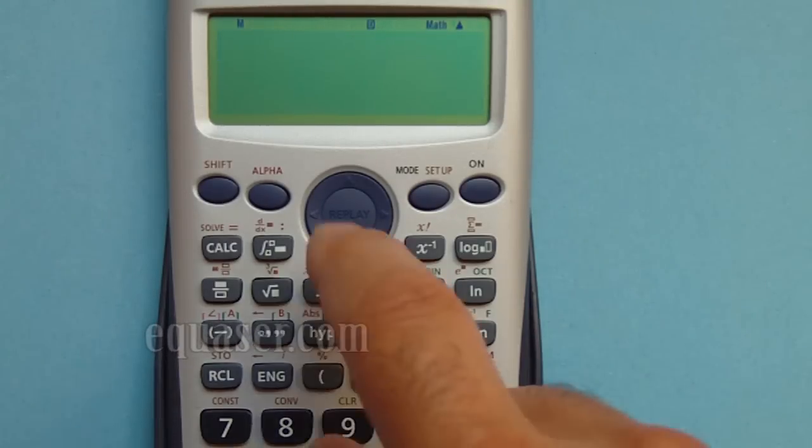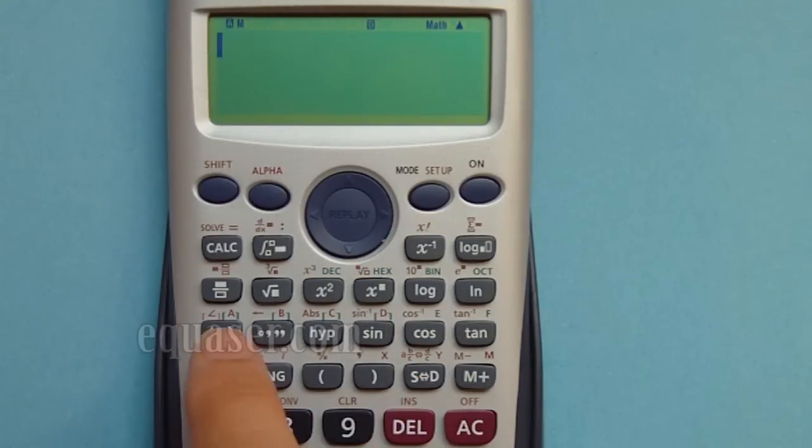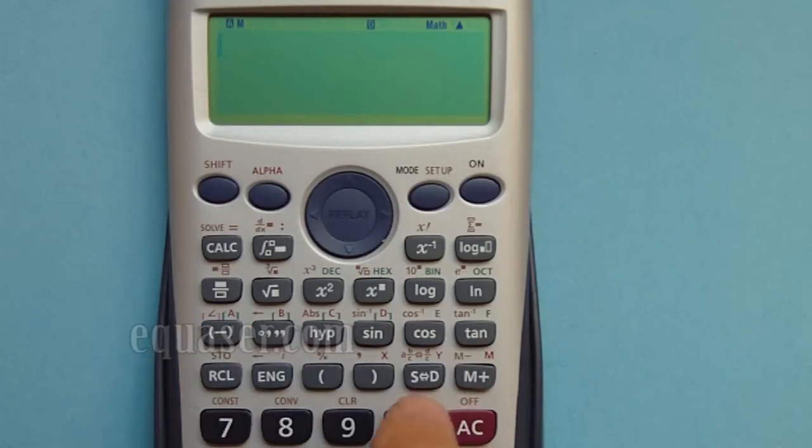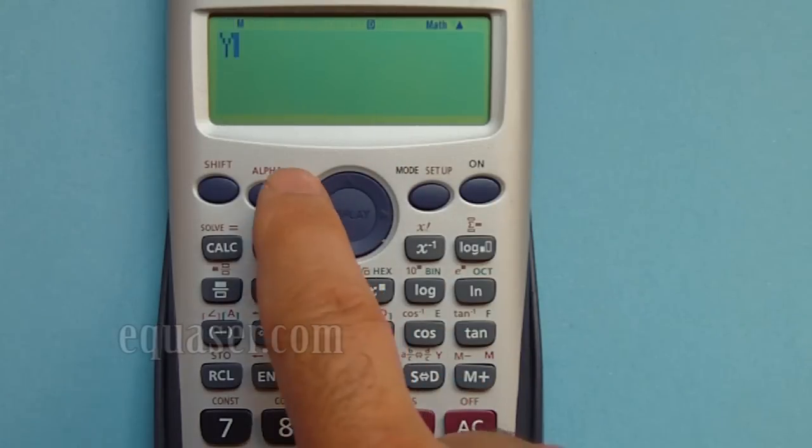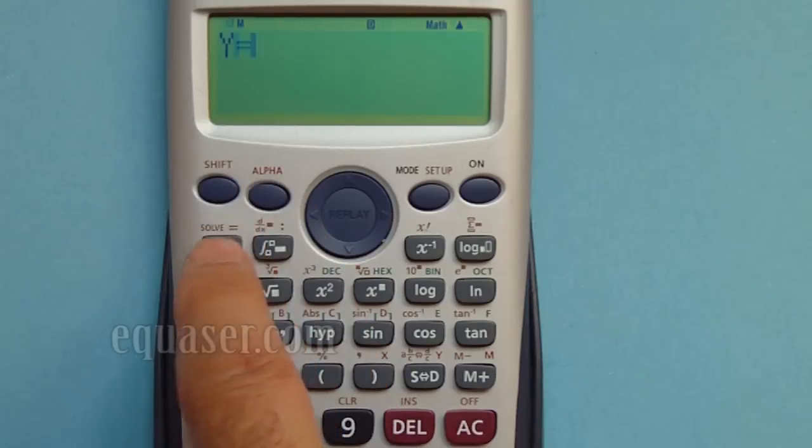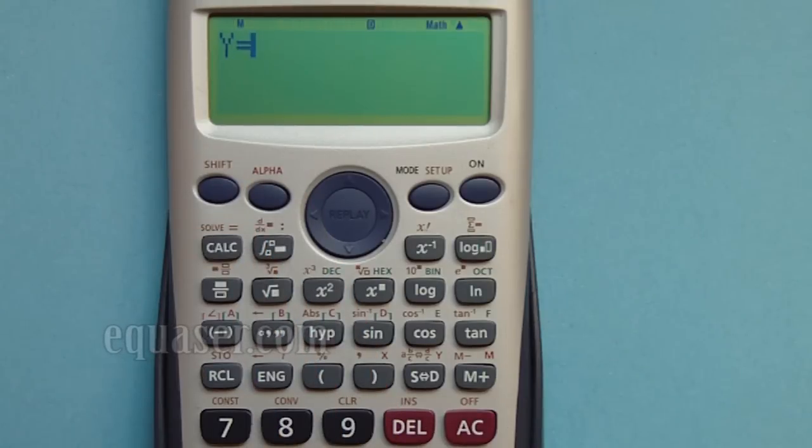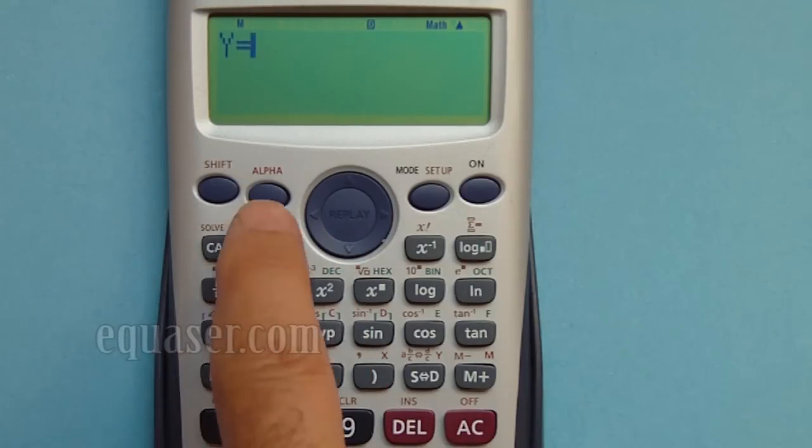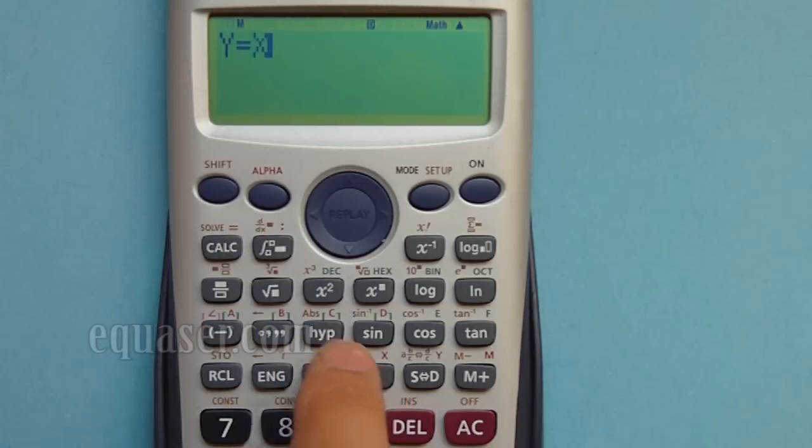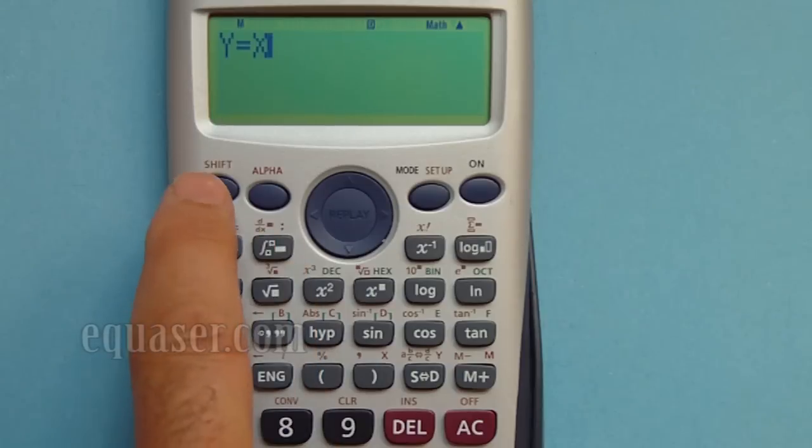Let's say I have an equation Y. You can use any variable A, B, C, or D. So I assume Y is - I press alpha and equal - Y is equal X cubed. I press alpha and X and then cubed, shift cube.